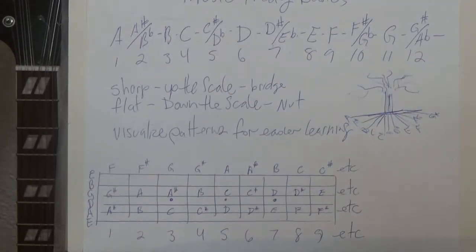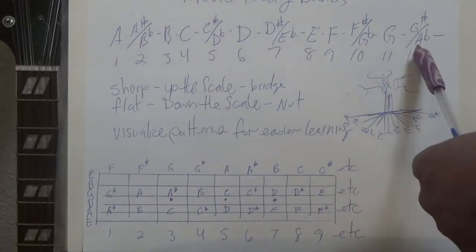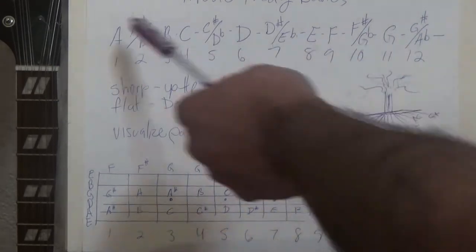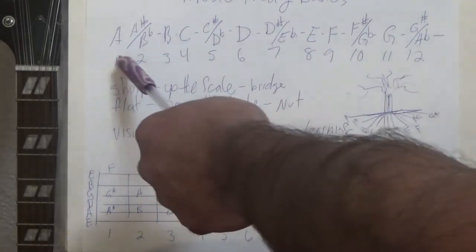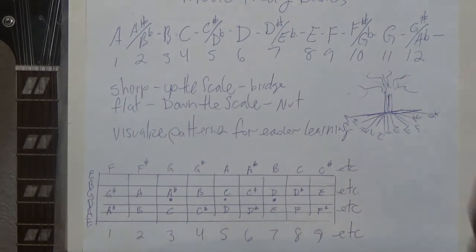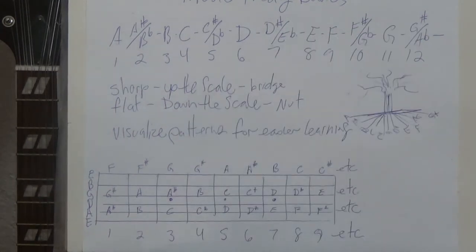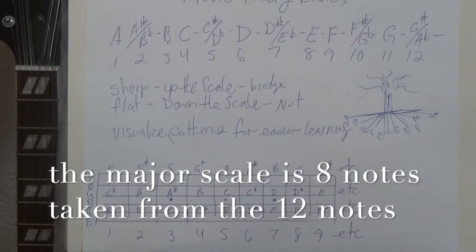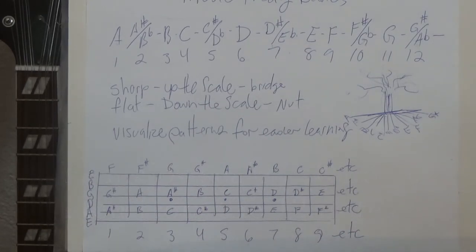But the major scale is eight notes that come from these 12 notes, which is the chromatic scale — also called the musical alphabet. So you start with the chromatic scale, which is 12 notes. You take eight notes out of that to create the major scale, and then out of the major scale you create everything else: the minor scales, diminished, all your different chord shapes and everything else.